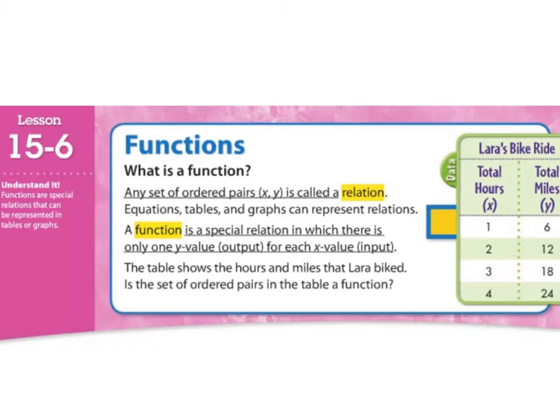So, functions. What is a function? Any set of ordered pairs (X, Y) is called a relation. We also call that an ordered pair, and now we're just calling it by another word, a relation, how they're related to each other. But a function is a special relation in which there is only one Y value output for each X value input. And if that's confusing currently, that's okay. We will explain it further.